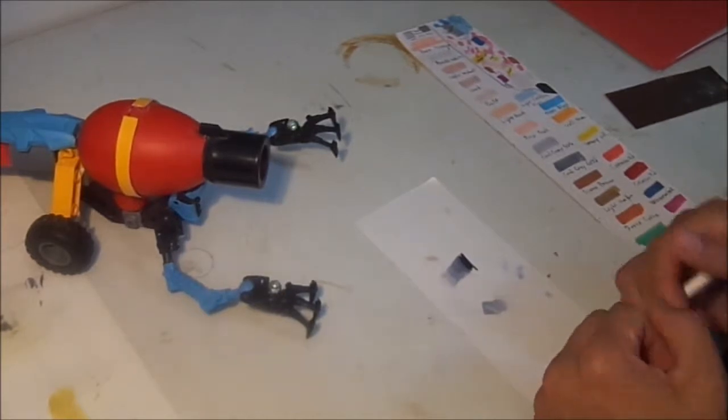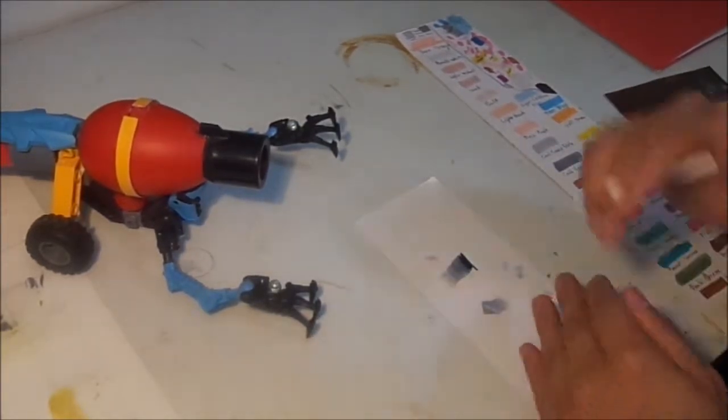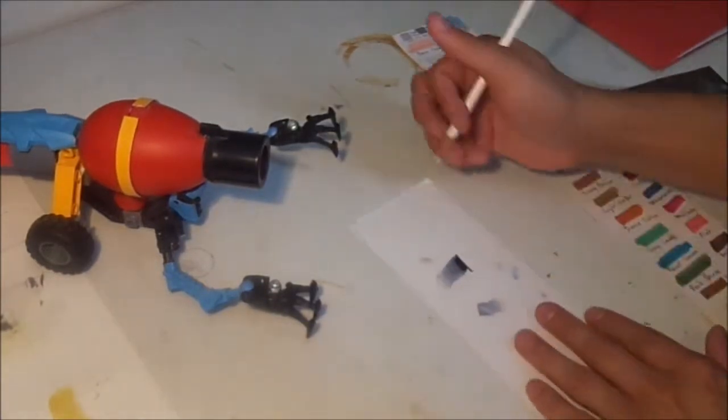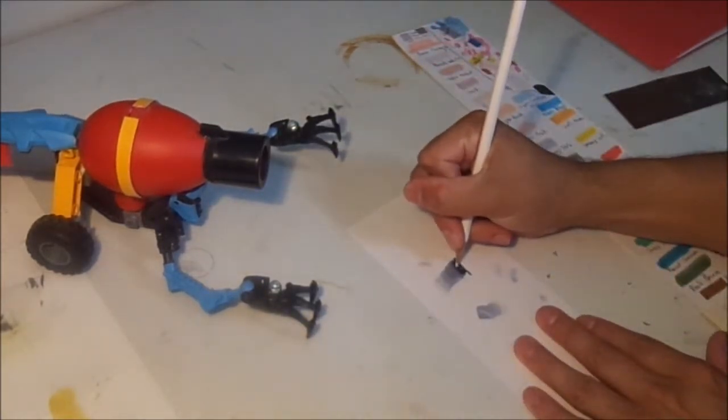So you have these colors and you realize 'Man, I want to do some highlights or I want to lighten a color for some reason.' You can use a Prismacolor pencil, any color pencil, or like I said, a gel pen, and add the white right on top.